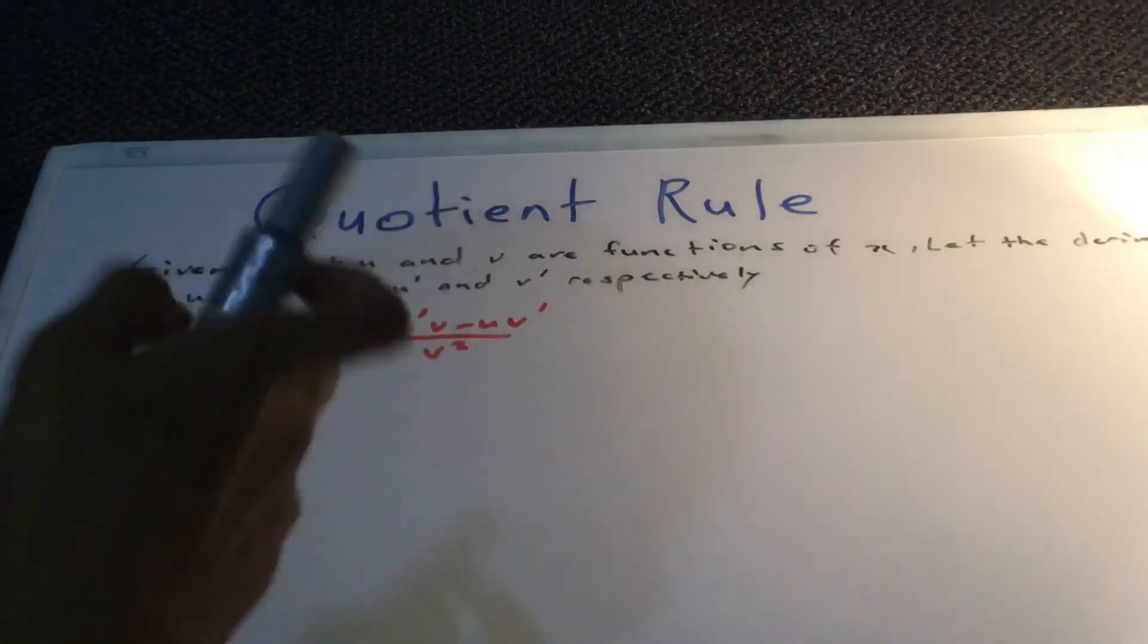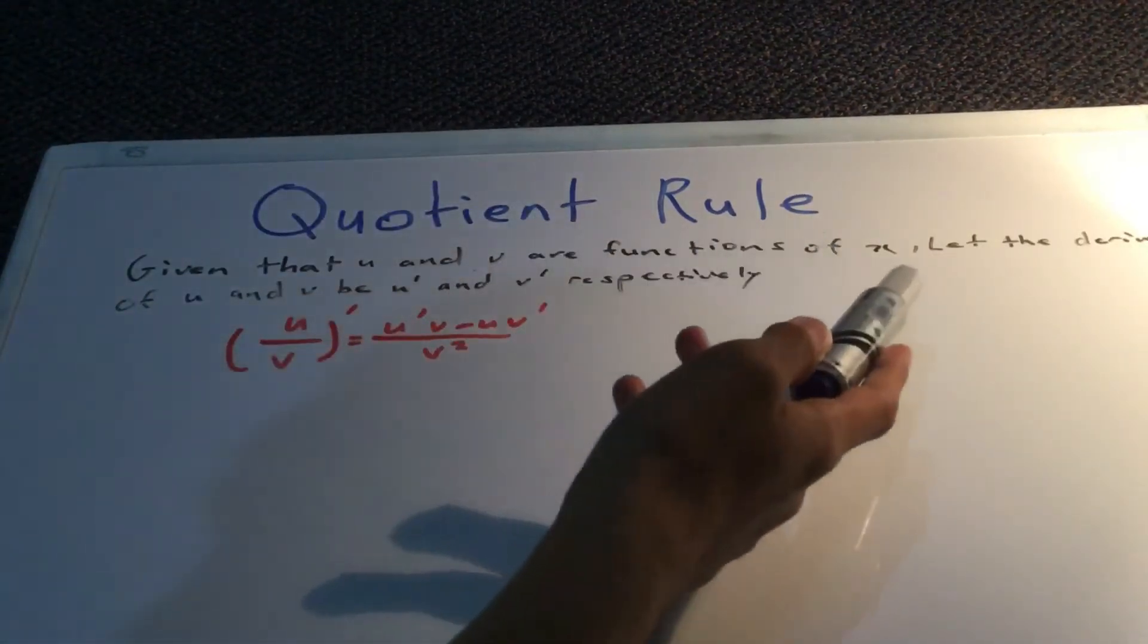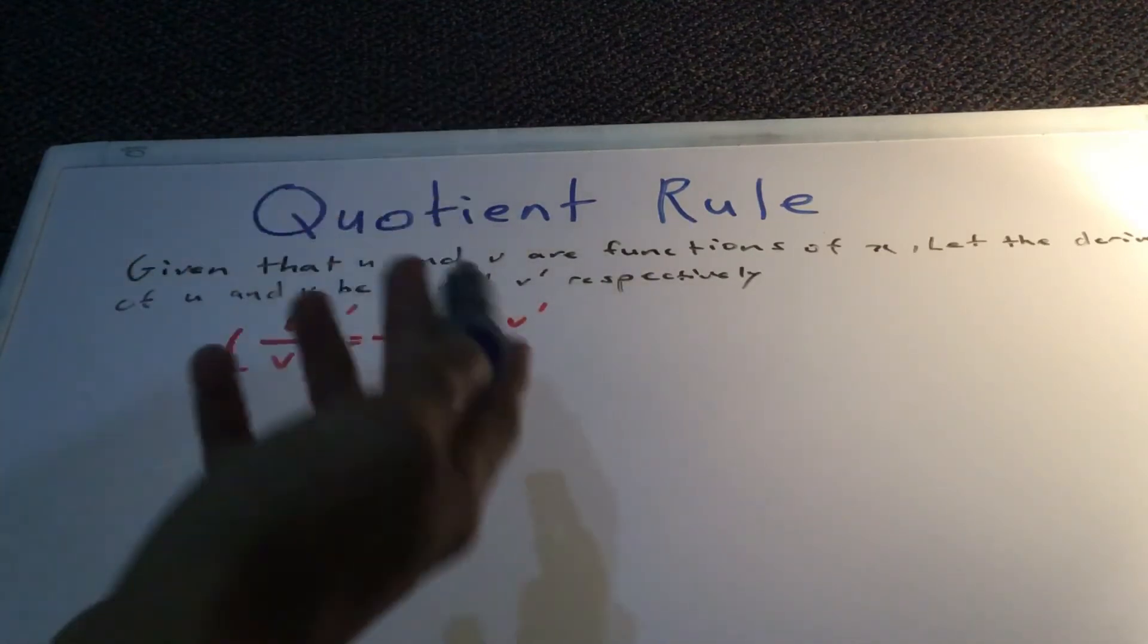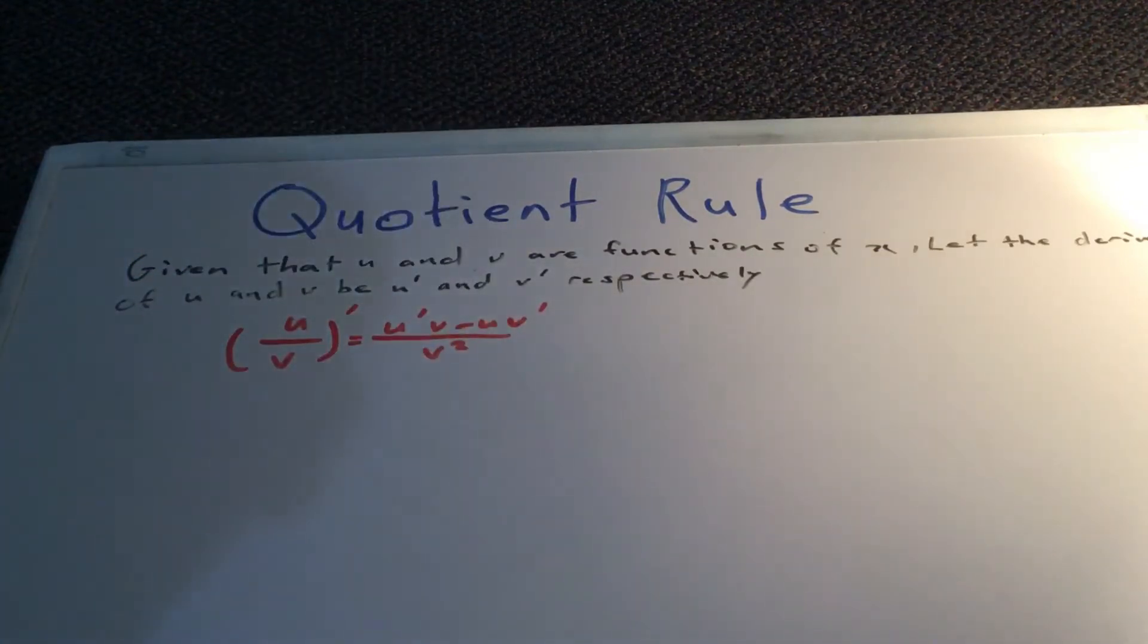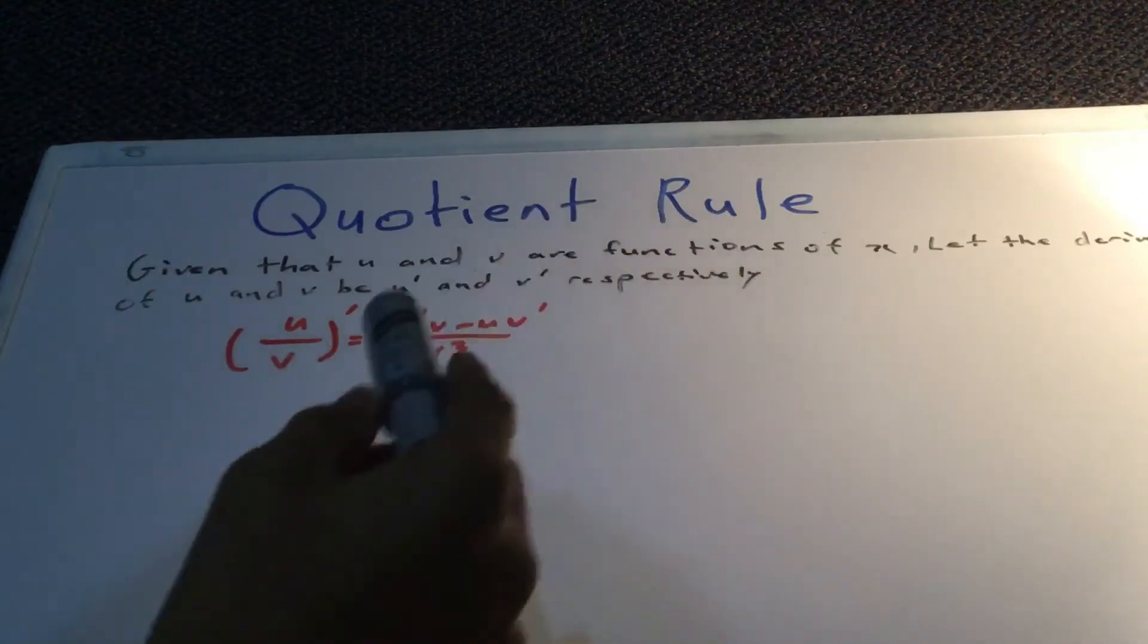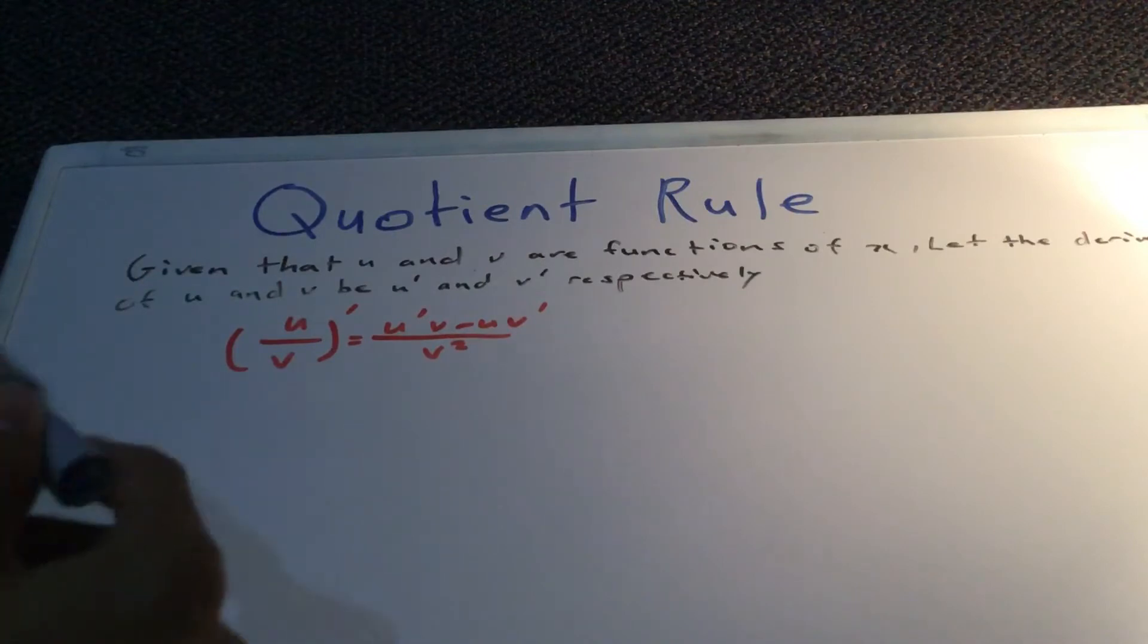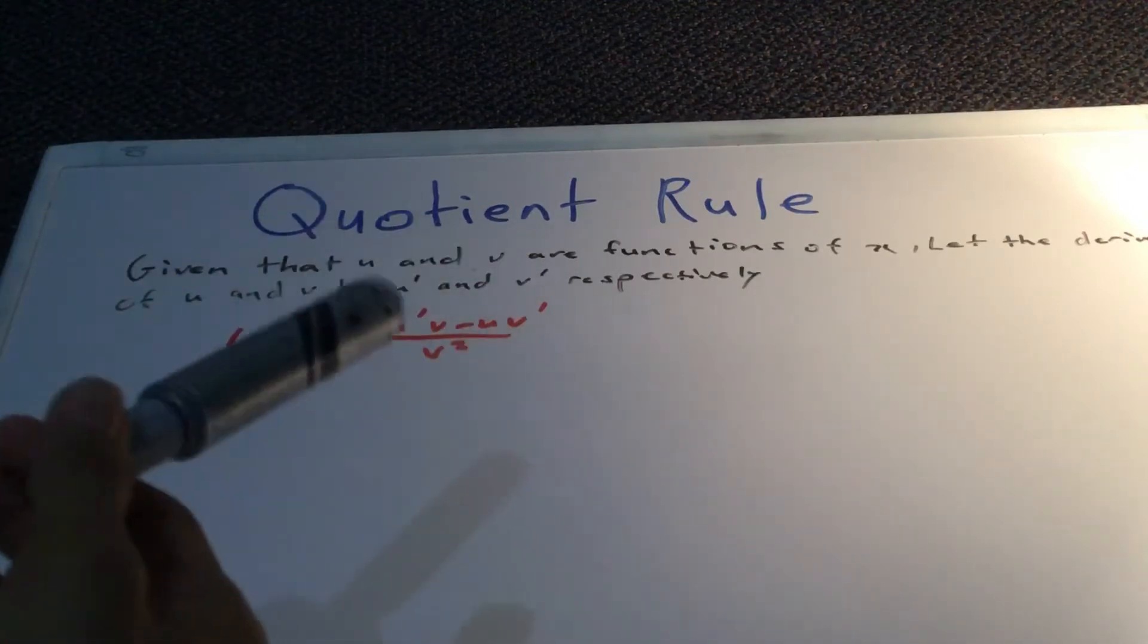First of all, given that u and v are functions of x, let the derivatives of u and v be u prime and v prime, respectively. This is explaining the process of when you derive the function, and that's what you have to do.